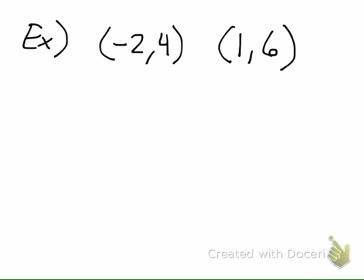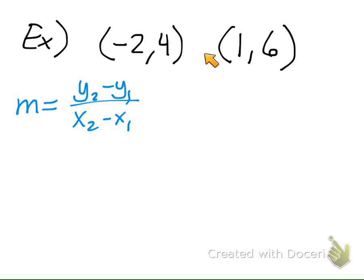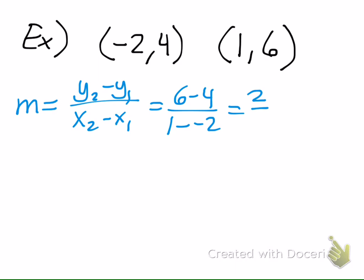First, find the slope between two points. The formula is: m equals the second y-coordinate minus the first, divided by the second x-coordinate minus the first. It doesn't matter which coordinate you start with, but you must be consistent — if you start with one y-coordinate, start with its corresponding x-coordinate. So it should be 6 minus 4 over 1 minus negative 2, which is 2 over 3. The slope between those two points is two-thirds. There will be a question like that on the quiz.